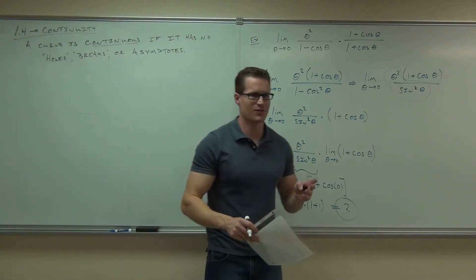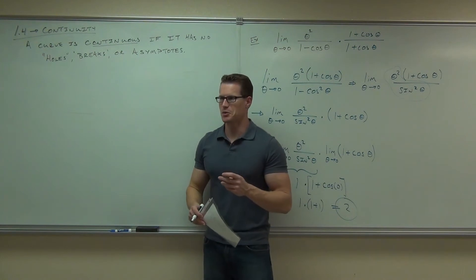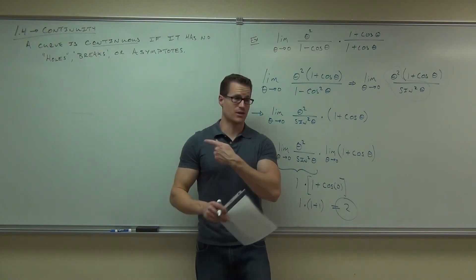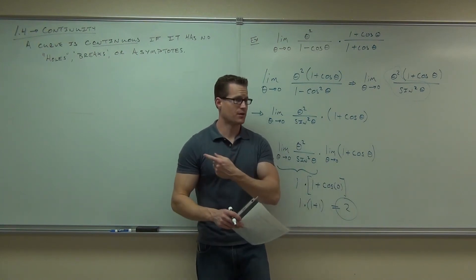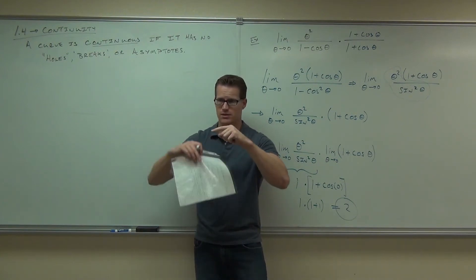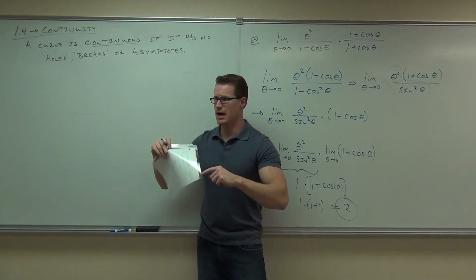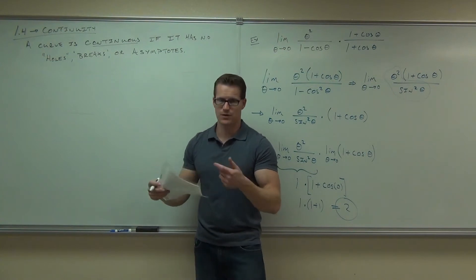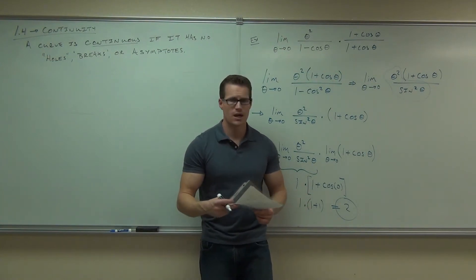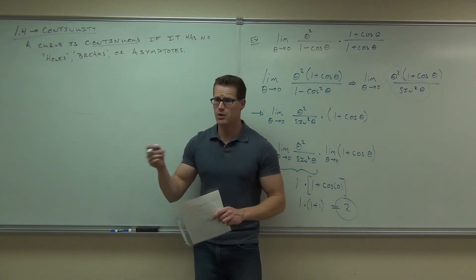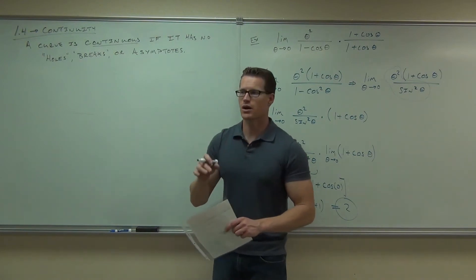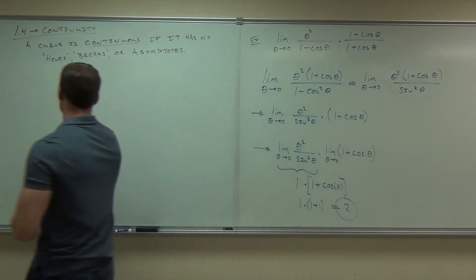Now would you like a more precise definition than that? Holes, breaks, and asymptotes — that's understandable, hopefully. If it doesn't have any holes, doesn't have a gap, and doesn't have any asymptotes, then it's continuous everywhere. If you do have those things, it'd be continuous most places, just not at those specific points.